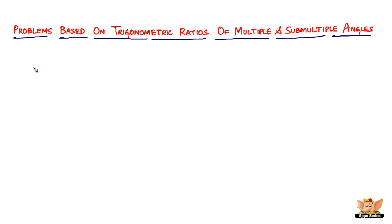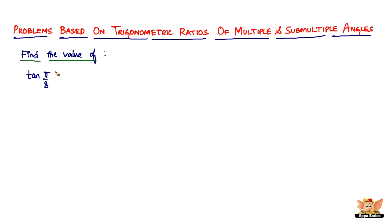In this video let us continue to solve more problems based on trigonometric ratios of multiple and sub-multiple angles. The first problem asks us to find the value of tan(π/8).